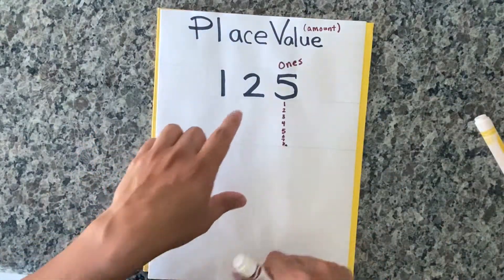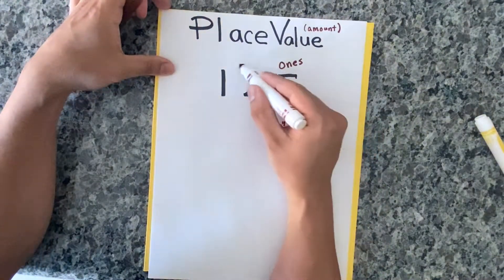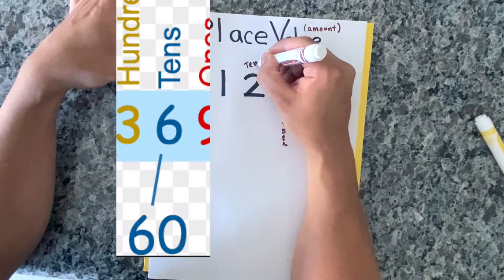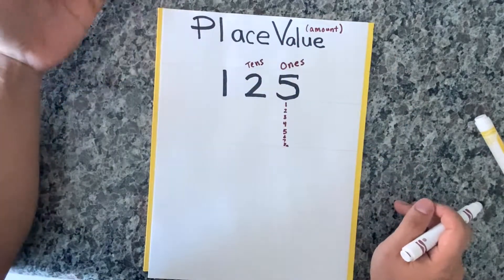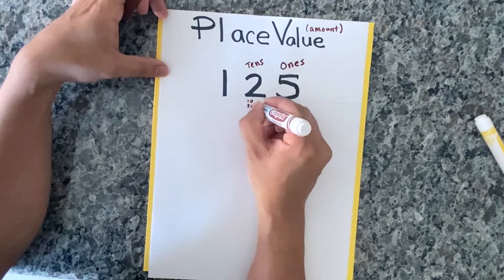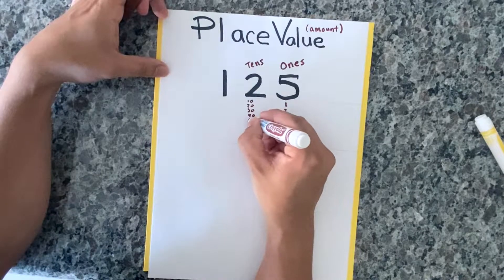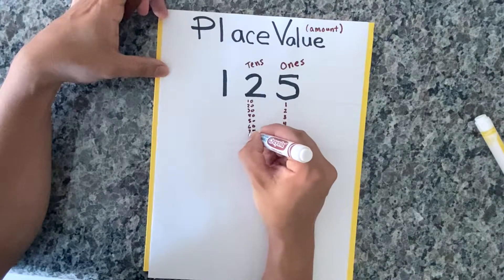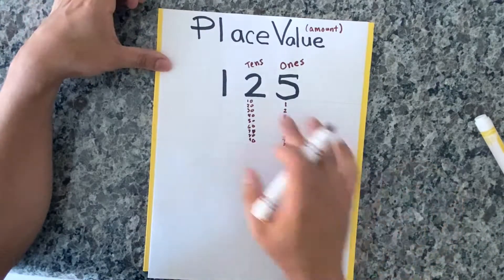The second place value is the number in the middle — the two. These go by tens. So count with me: 10, 20, 30, 40, 50, 60, 70, 80, 90. These all go by tens.